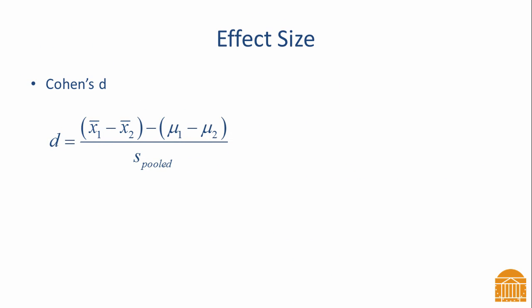To be complete, we should also compute Cohen's d effect size. The numerator is the difference of sample means minus the difference of population means given by the null, which is usually zero, simplifying the equation. The denominator is the pooled standard deviation — not the pooled variance — notice there is no superscript on the letter s. The interpretation of Cohen's d is the same as with the one-sample t-test: it describes the effect in standard deviation units. For example, if the effect size is 1.2, it means the two means are 1.2 standard deviations away from each other.